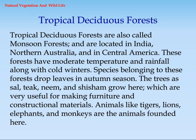Tropical Deciduous Forests are also called monsoon forests and are located in India, Northern Australia, and Central America. These forests have moderate temperature and rainfall along with cold winters. Species belonging to these forests drop leaves in autumn season. Trees such as sal, teak, neem, and shisham grow here, which are very useful for making furniture and constructional materials.